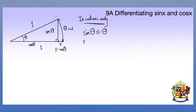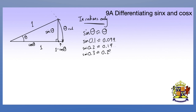You can check a few values on your calculator. Sine of 0.1 gives you 0.099..., sine of 0.2 gives you 0.19..., and sine of 0.3 gives you about 0.29. So you get these approximated answers and they work pretty well.